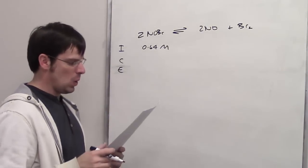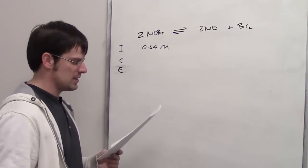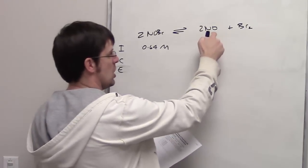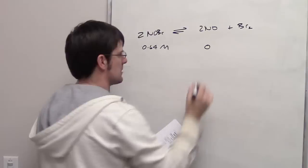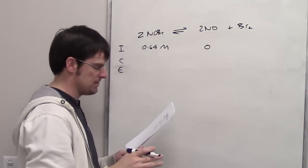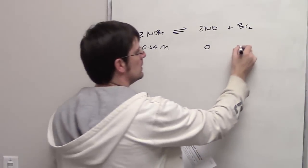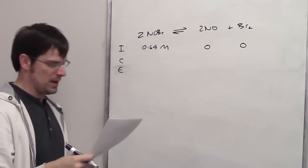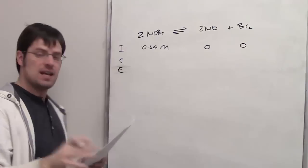It says that that many moles placed in 1 liter flask containing no nitrogen monoxide, so there's 0 nitrogen monoxide at the initiation, and no bromine, so 0 bromine at initiation.